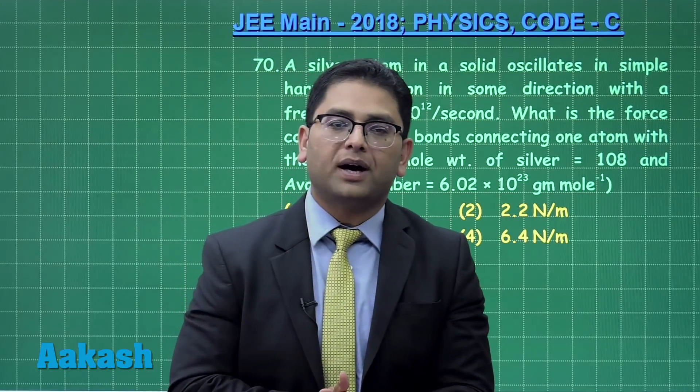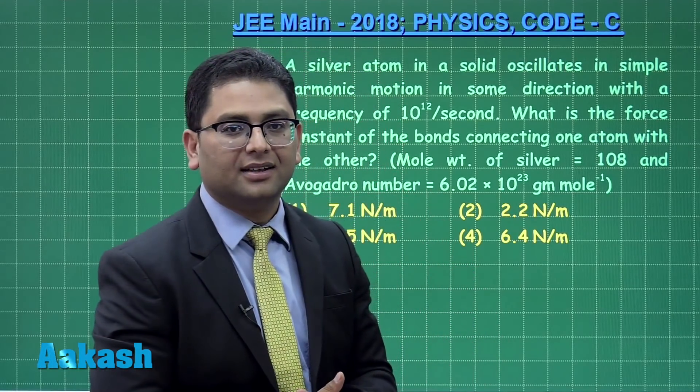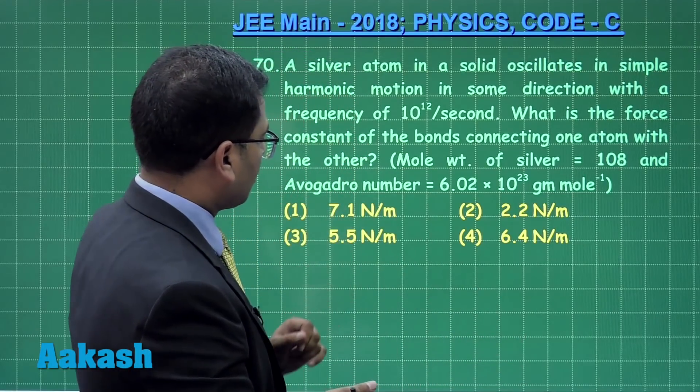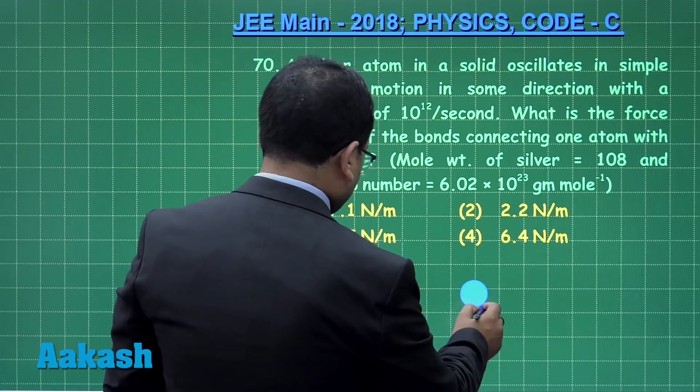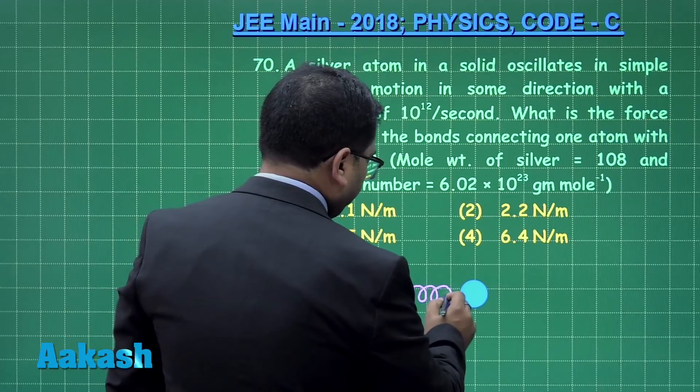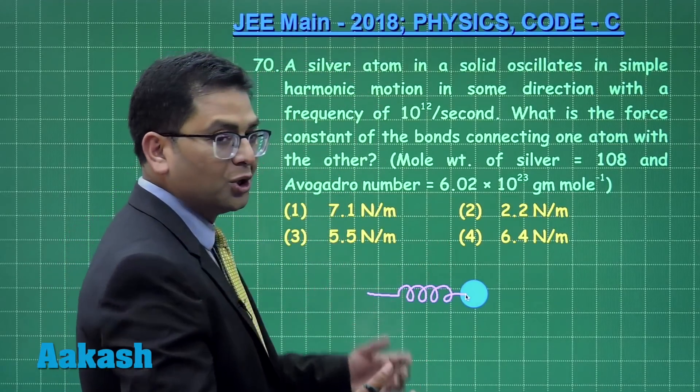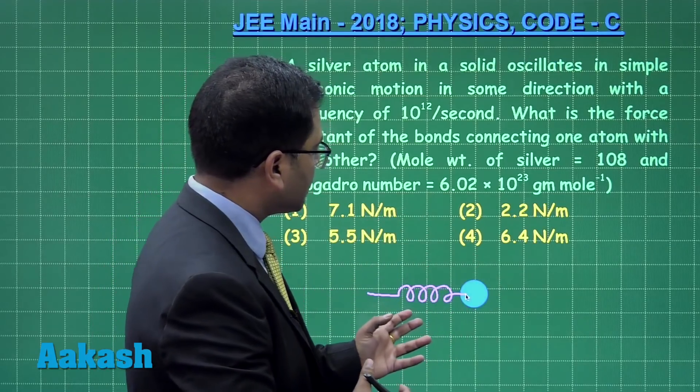The force constant means the regular K of simple harmonic motion, which is F/x. The same K is written as T equals 2π√(m/K) in the expression of time period.